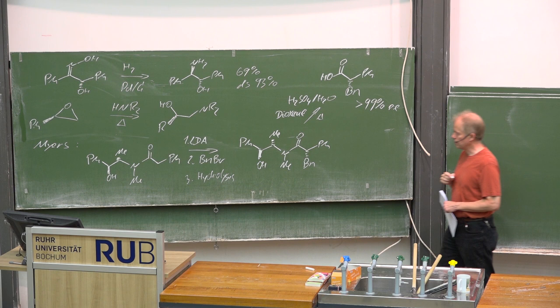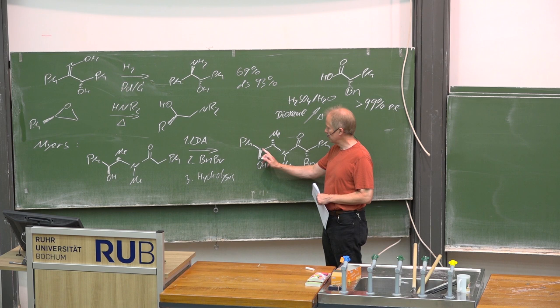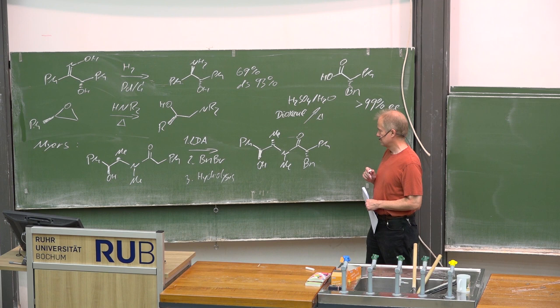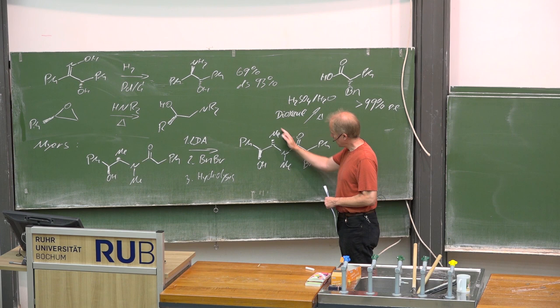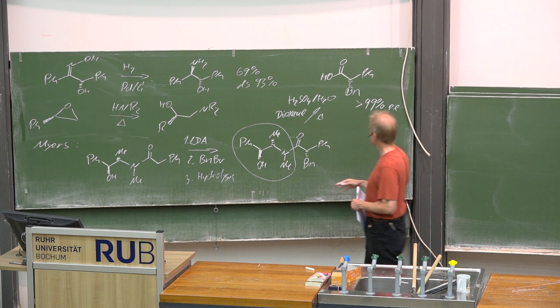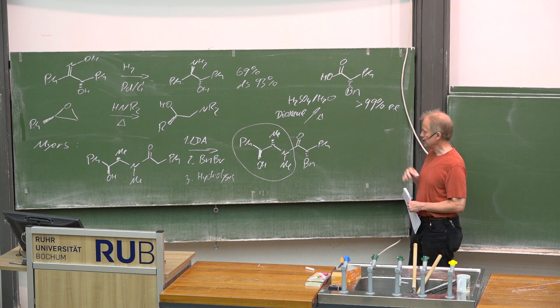The target product was obtained with an enantiomeric excess of better than 99%. Please keep in mind, in this step you are hoping for a high diastereoselectivity since you have three chiral centers in your product and two chiral centers in the starting material.